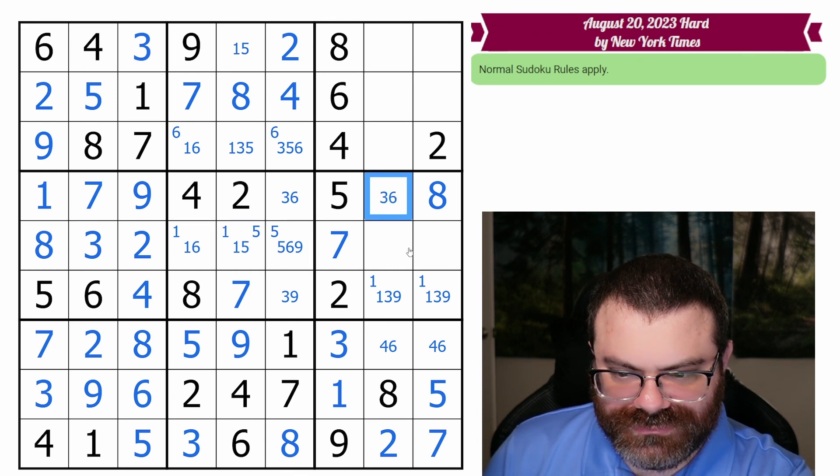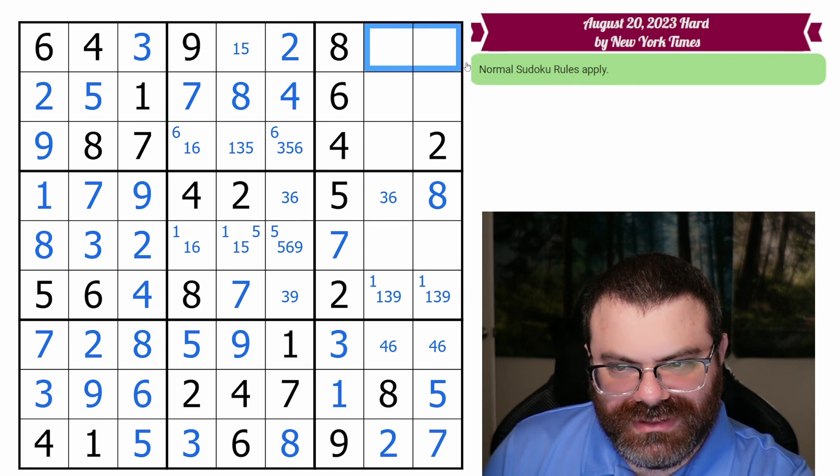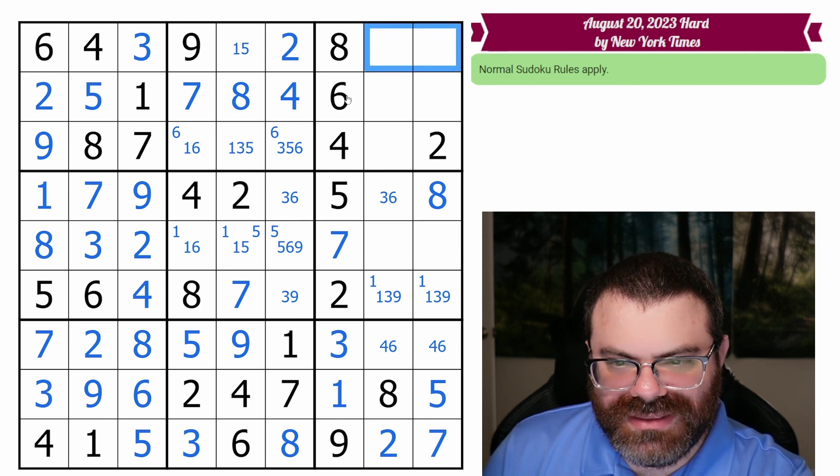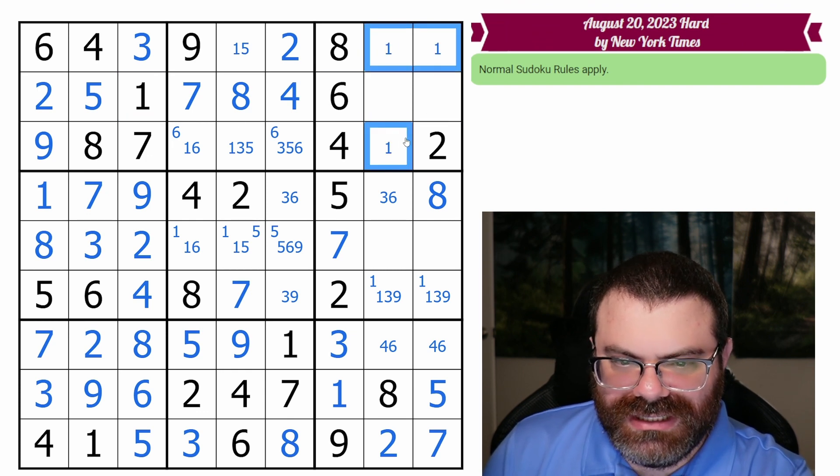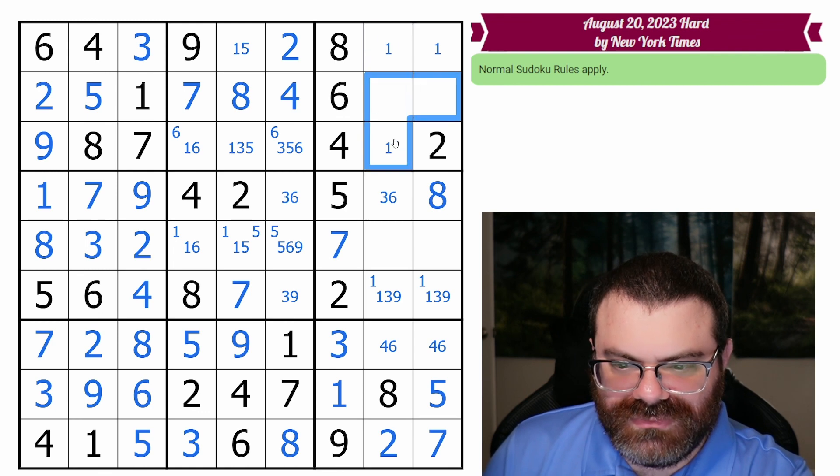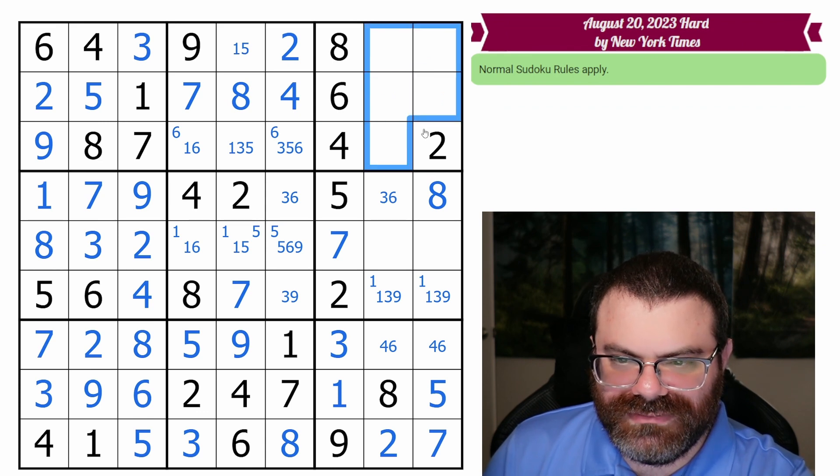Three or six here. What can be done over here? I'm actually just going to think about this box in general. It needs a one, which can still be in any of these. It needs a three, which can be down here. Actually, the three must be here. This is a pair. Hold on. Let's not do that. Let's do this pair. This pair is three and nine.